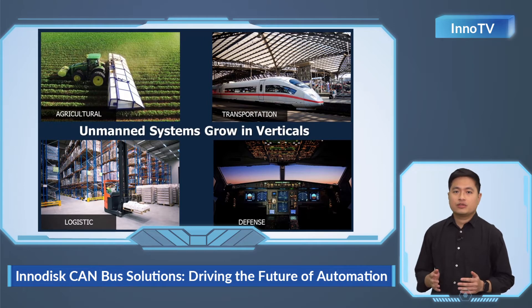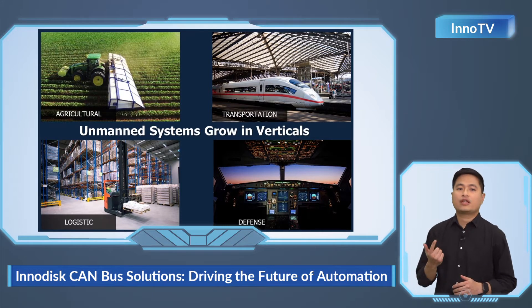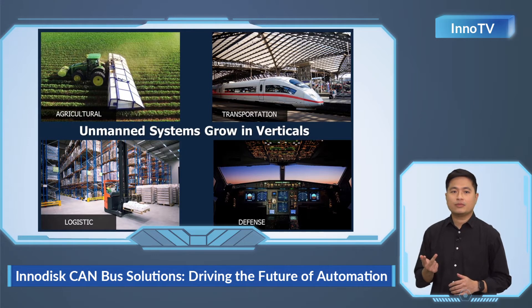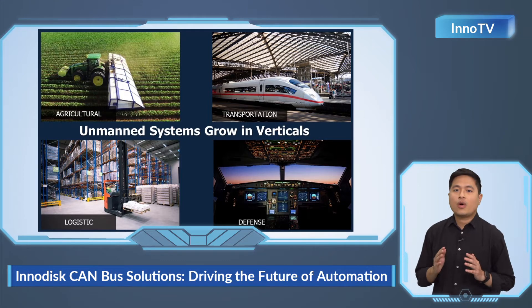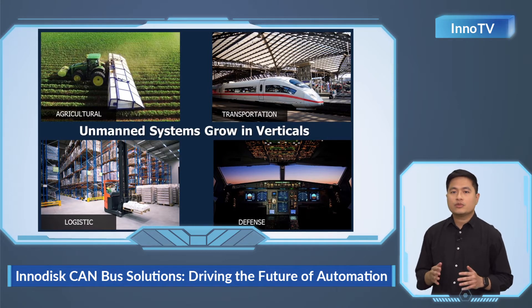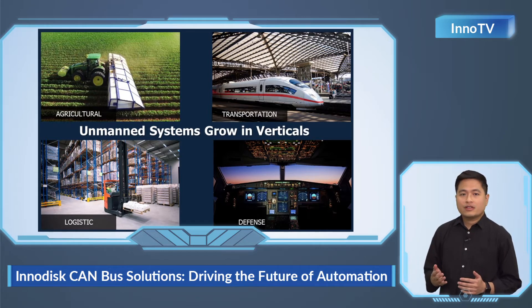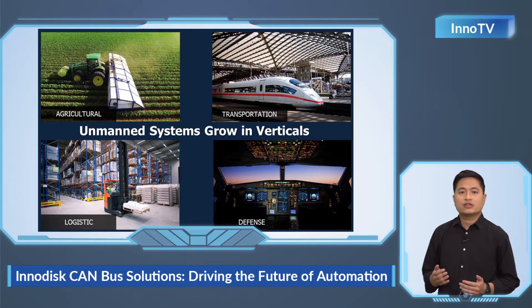In short, automation means using machinery instead of human work to increase efficiency, raise productivity, and save costs at the same time. Unmanned systems are widely used in industrial automation. Unmanned systems are controlled by computers and usually used in a wide variety of applications that require routine actions. They can perform various tasks without human intervention, thereby reducing costs and increasing efficiency and productivity.